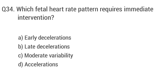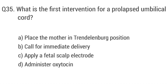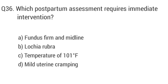Question 34: Which fetal heart rate pattern requires immediate intervention? The right answer is option B: Late decelerations. Question 35: What is the first intervention for a prolapsed umbilical cord? The right answer is option A: Place the mother in Trendelenburg position.